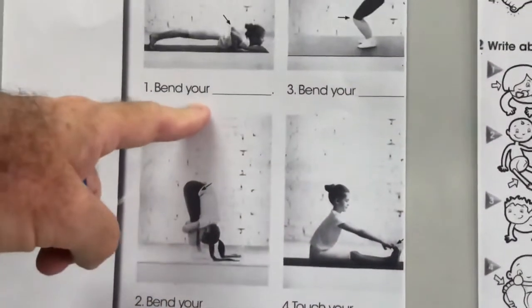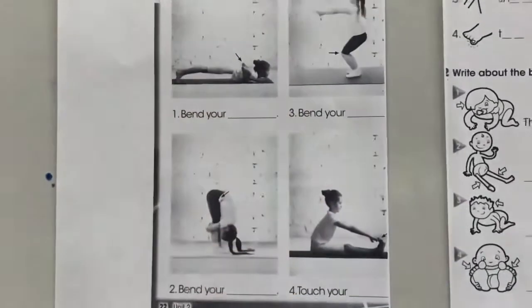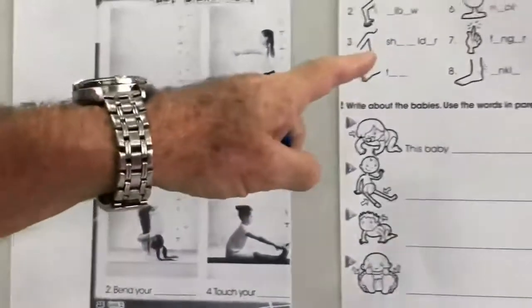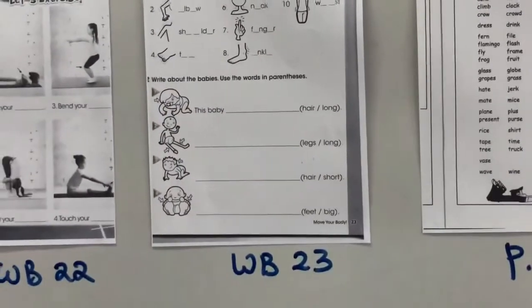What's the exercise? Number one, number two, number three, number four. Number on page workbook 23.